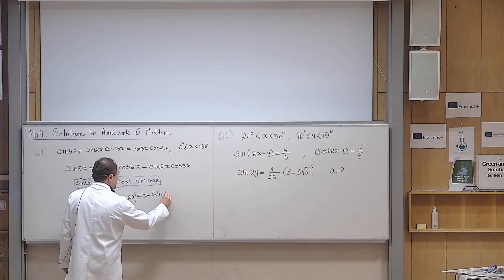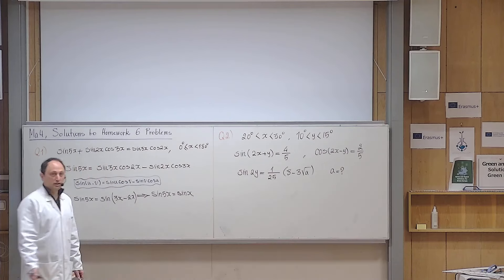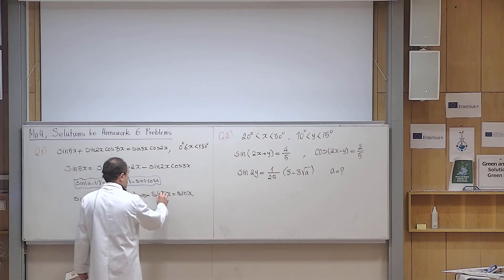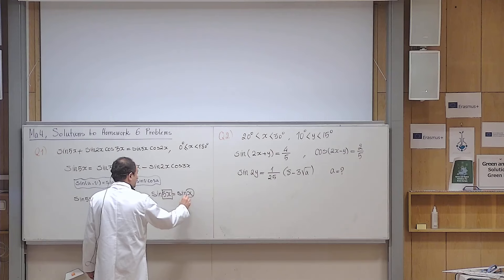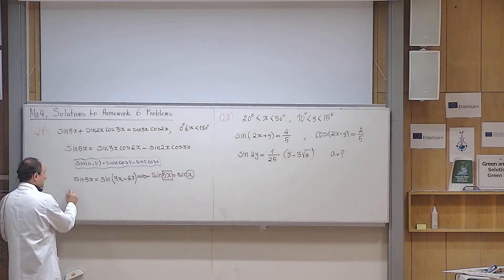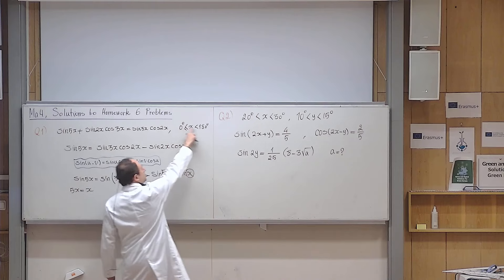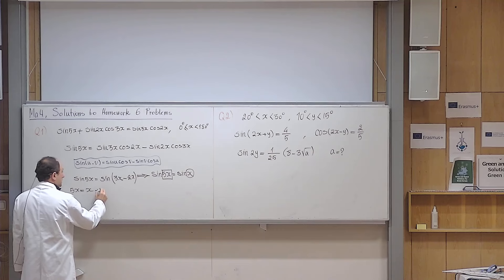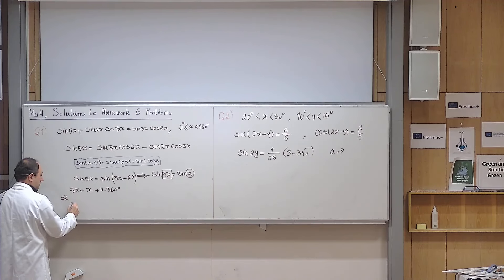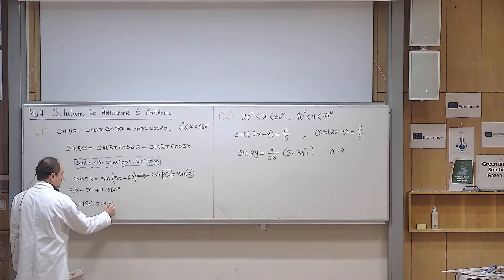Since sine 5x equals sine x, this is a standard trigonometric equation. I give the role of box to 5x and circle to x. If two sines are equal, either the box equals the circle — this is a standard equation — so either 5x equals x plus n times 360 degrees, or 5x equals 180 degrees minus x plus n times 360 degrees.